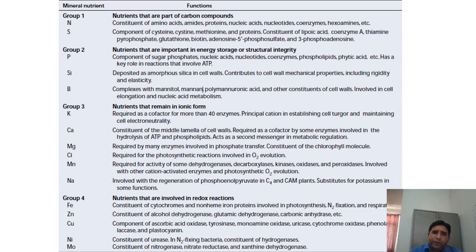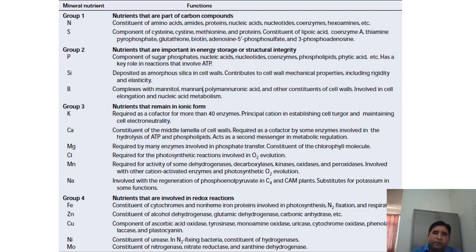These nutrients can be grouped on the basis of their physiological importance into four categories. In Group 1 are nutrients that are part of carbon compounds, like nitrogen and sulfur. Nitrogen is the constituent of amino acids and nucleic acids, and sulfur is also a component of various proteins, amino acids, and other molecules. In Group 2 are nutrients important in energy storage or structural integrity — for example, phosphorus, which is an essential component of ATP, the currency of energy.